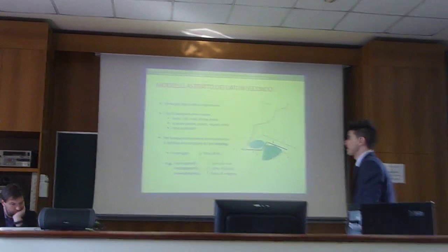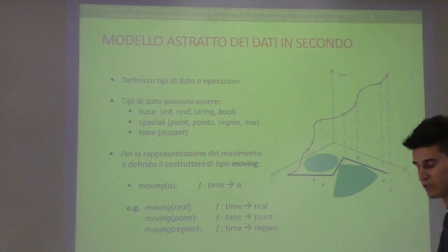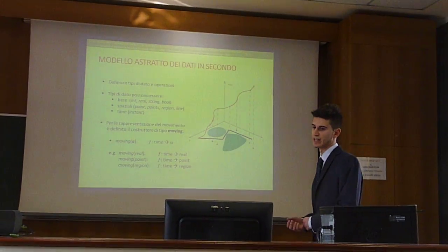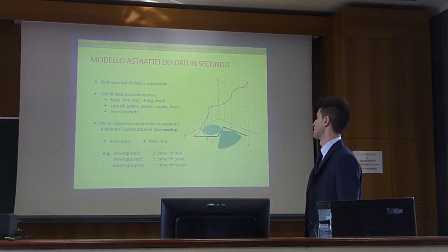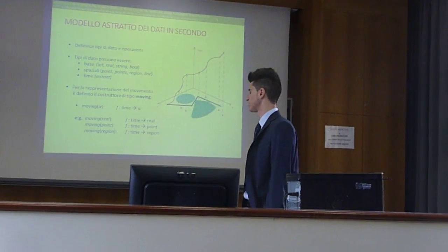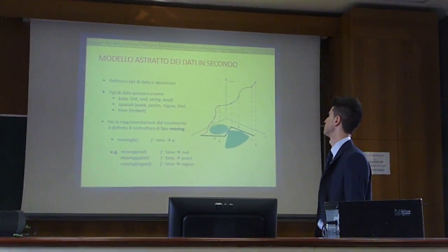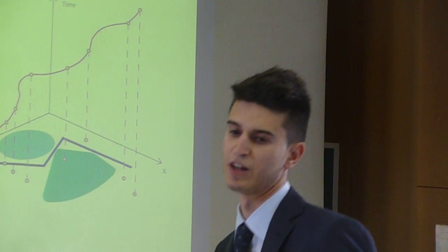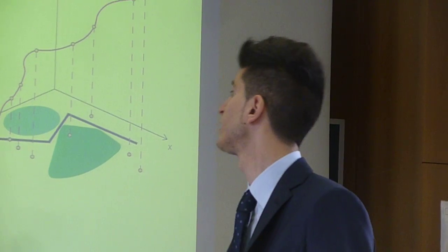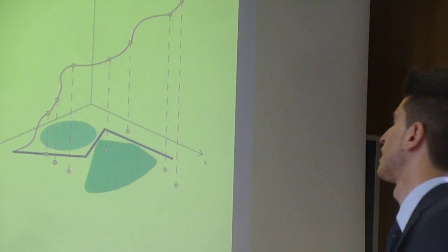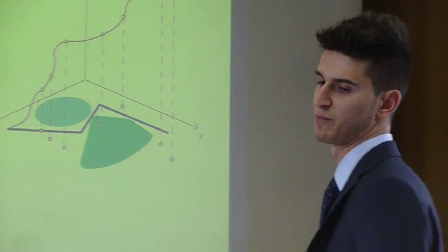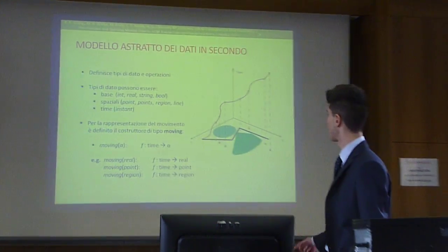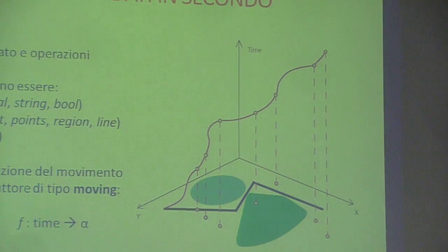Ora volevo illustrare il modello abstract. Nel modello astratto si definiscono tipi di dato e operazioni. I tipi di dato portano basi come real e screen rule, e spaziali come point e region, e di tempo quindi instant. La cosa più fondamentale è la definizione del costruttore di tipo moving per la rappresentazione del movimento. Un oggetto moving alpha è una funzione che va da Time a Alpha. Il costruttore di tipo moving può essere applicato sui dati di base e spaziali: ad esempio, moving real è una funzione Time → Real, moving point è Time → Point. Il moving point è rappresentato come una linea continua che cresce nel tempo.